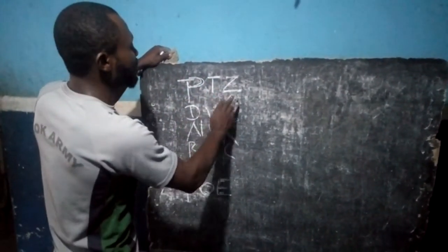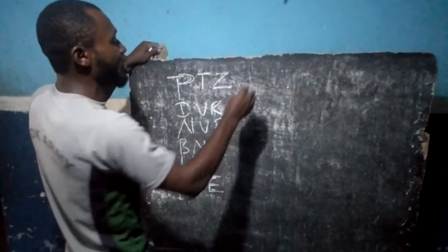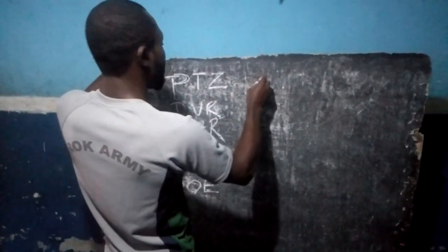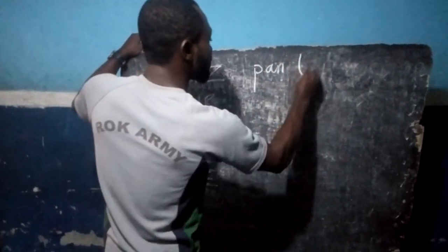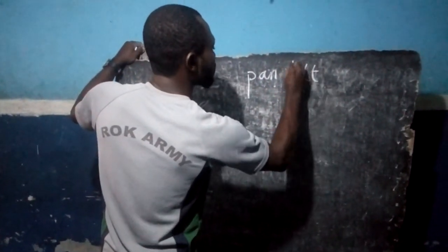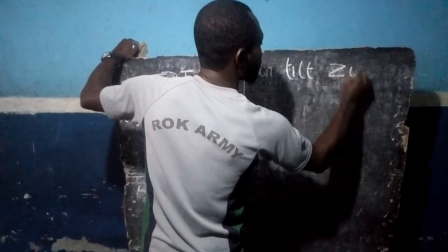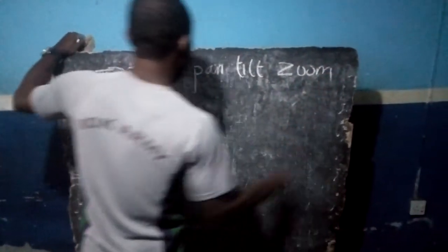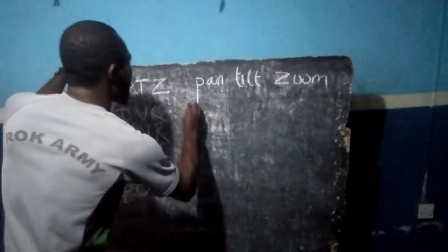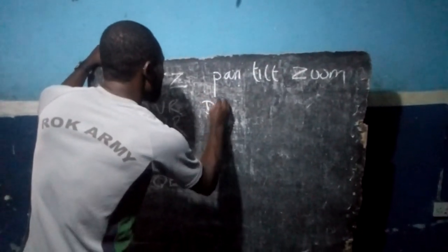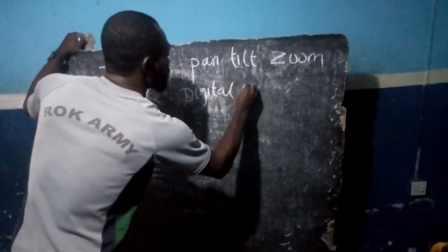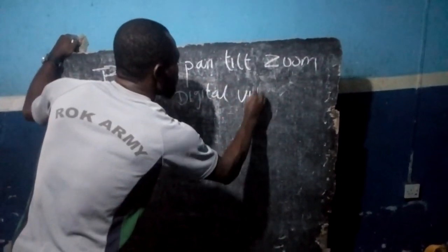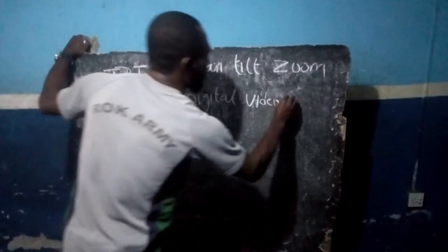Let's talk about PTZ. What is the meaning of PTZ? PTZ simply means Pan, Tilt, Zoom. This is the meaning of PTZ. When it comes to DVR, DVR simply means Digital Video Recorder.